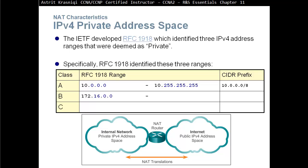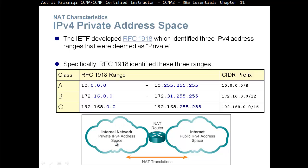Class B range is from 172.16.0.0 up to 172.31.255.255, with prefix /12. Class C range is anything from 192.168.0.0 up to 192.168.255.255, and the prefix length is /16. All of these addresses are private addresses to be used within our network, and when they go to the internet they need to be translated to a public address.